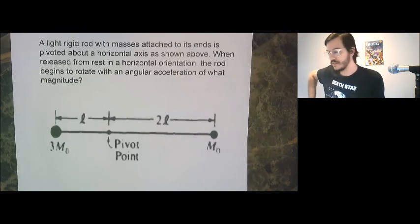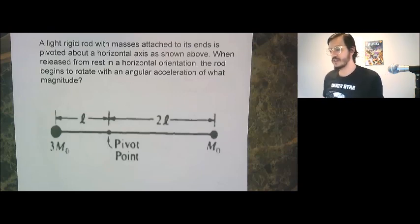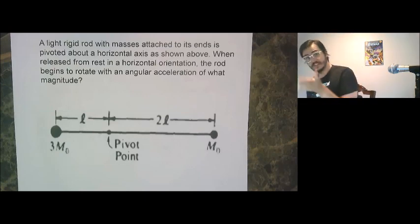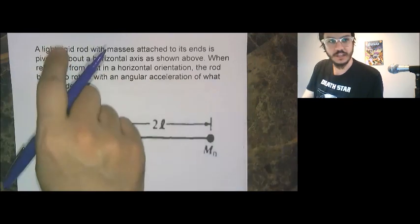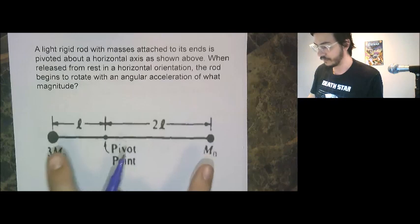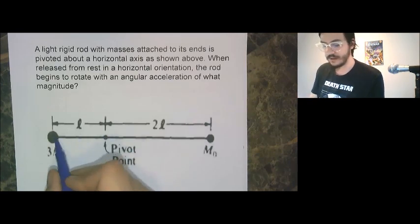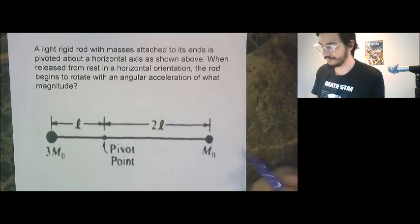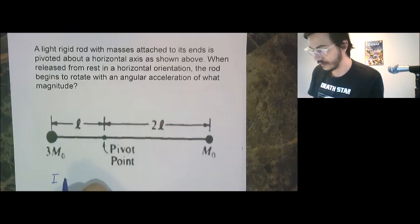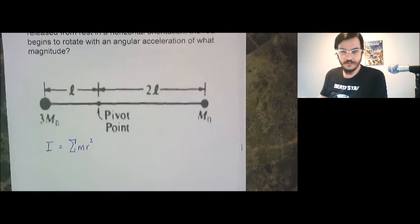One last one. A light rod with masses attached to its ends is pivoted about a horizontal axis as shown above. When released from rest in a horizontal orientation, the rod begins to rotate with an angular acceleration of what magnitude? So this is a seesaw question. However, we're not going to get a balance. Light rigid rod. I imagine that the light means that we can ignore the mass of the rod itself. And we've got these masses attached to the ends. Ah, I think I've got it. This, if we ignore the mass of the rod, what does that make this mass? A point mass. We've got another point mass over here. So we'll just use the moment of inertia is the sum of mass times radius.